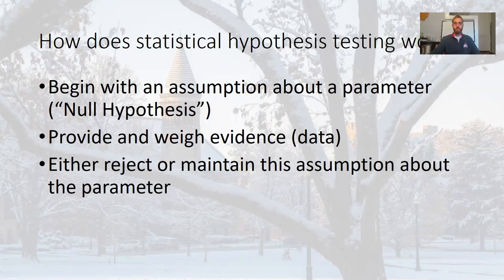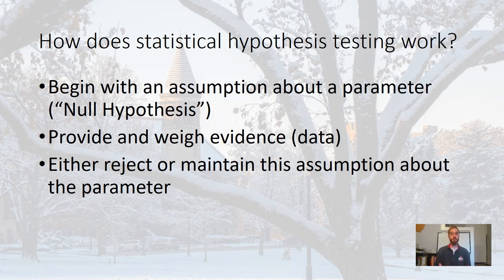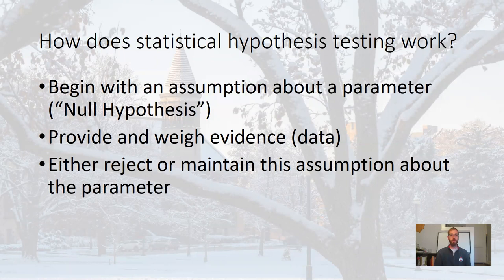In the context of statistical hypothesis testing, we begin with an assumption about a parameter. Remember, the parameter is unknown, so we have to make assumptions about it. We weigh evidence — the data we've collected — to tell us whether that assumption is reasonable or not. The data either is compatible with our assumption about the parameter or not, and then we either reject or maintain that assumption. That assumption about the parameter we begin with is called the null hypothesis.